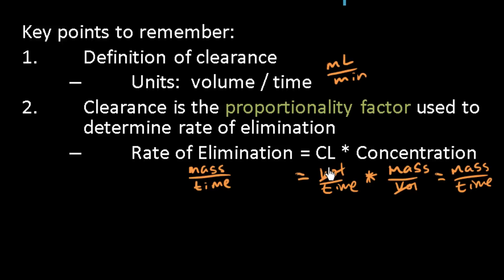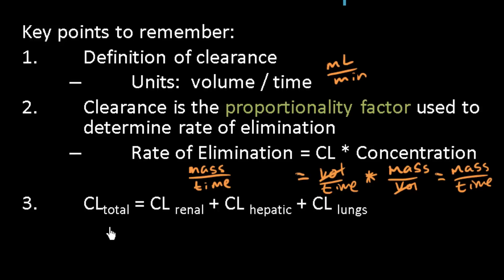The third key point is how we clear drugs. Any organ with access to the outside world can clear drugs: the kidneys excrete drugs into the urine, the liver excretes drugs into bile, and the lungs excrete drugs into the air. To find total clearance, we add up the clearance at each of those individual organs.